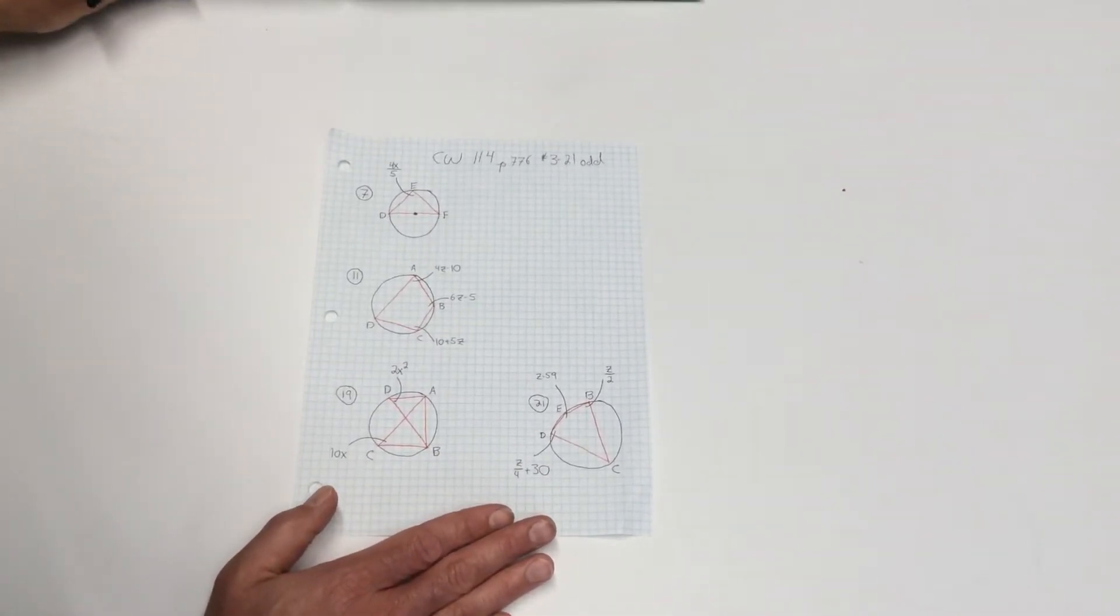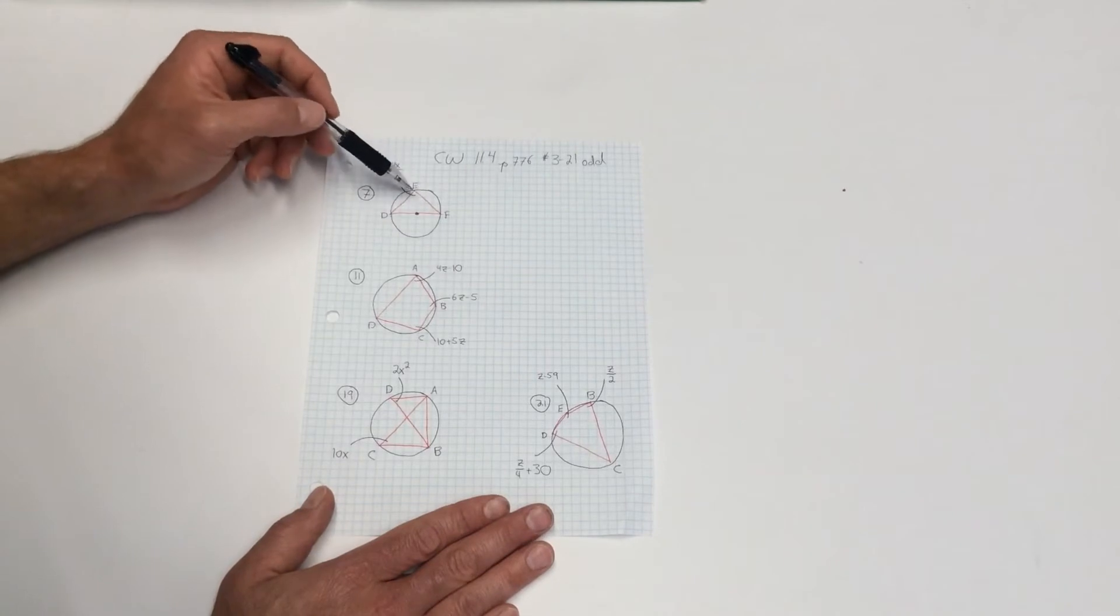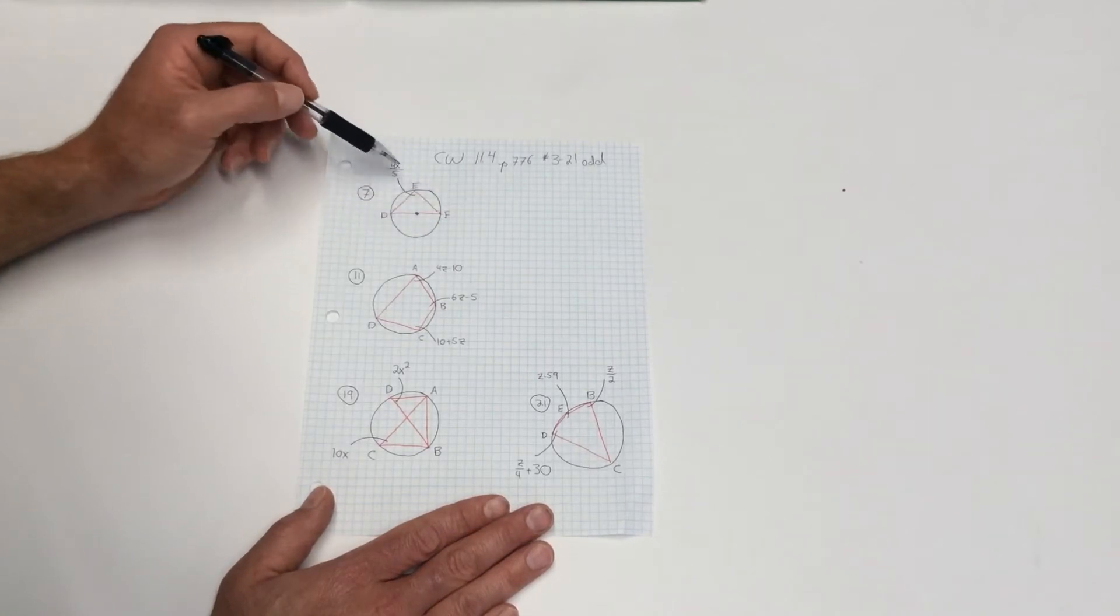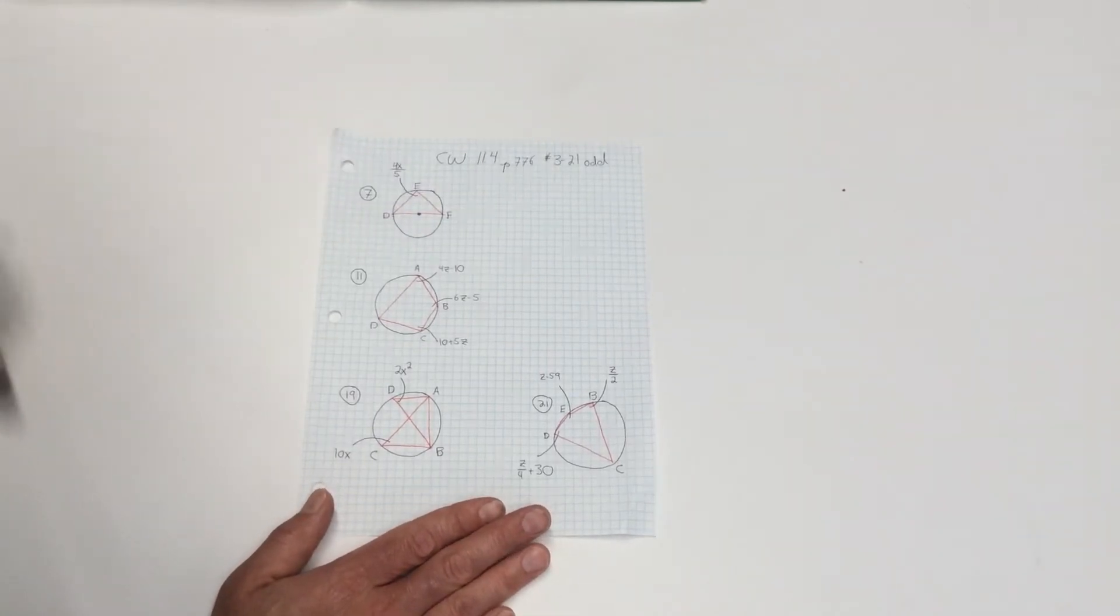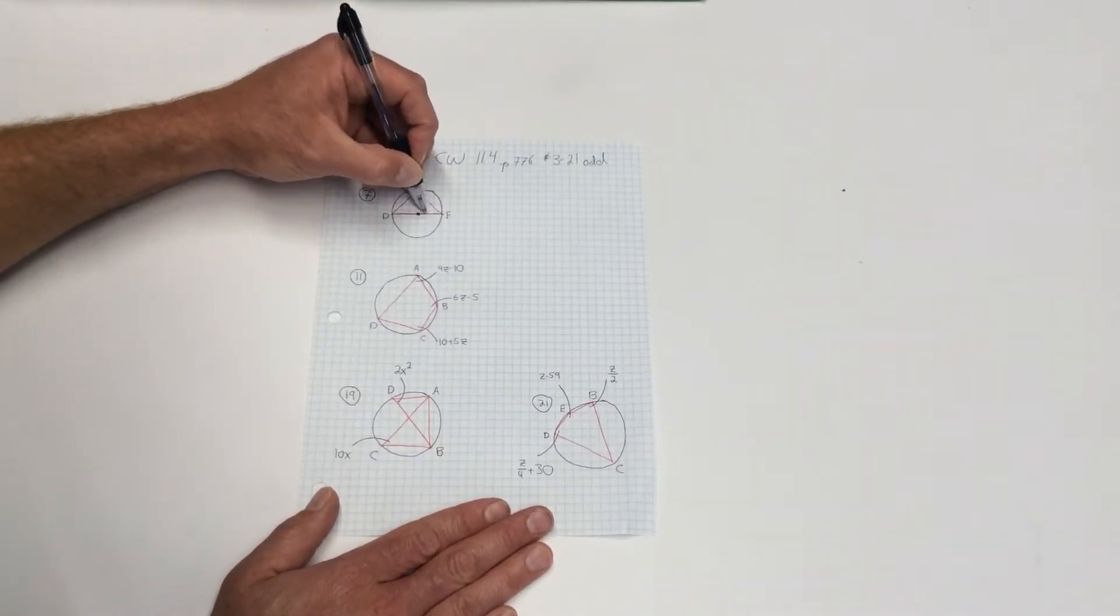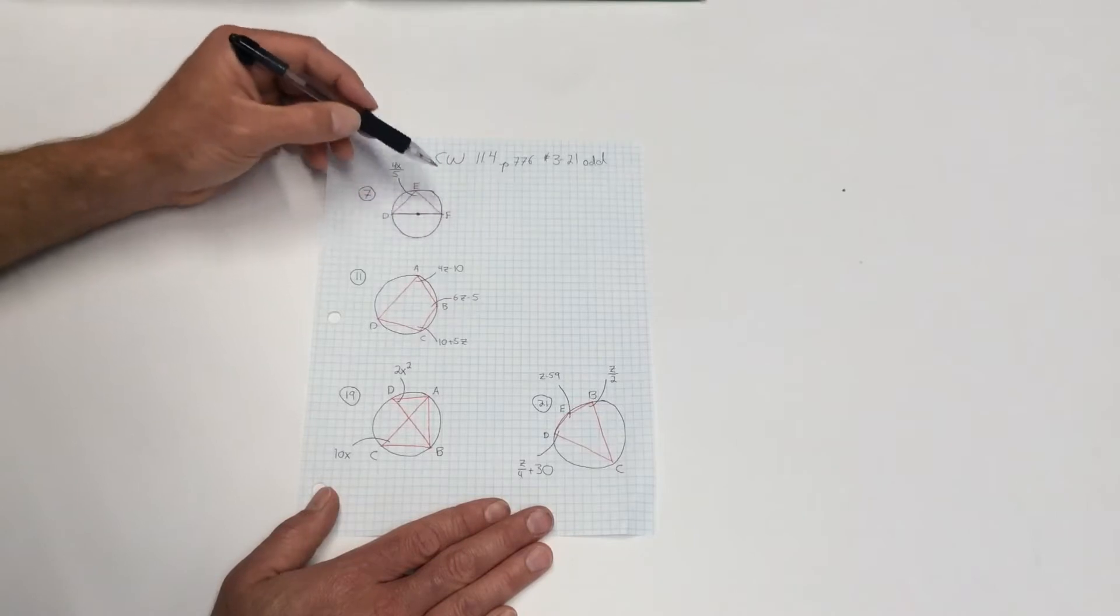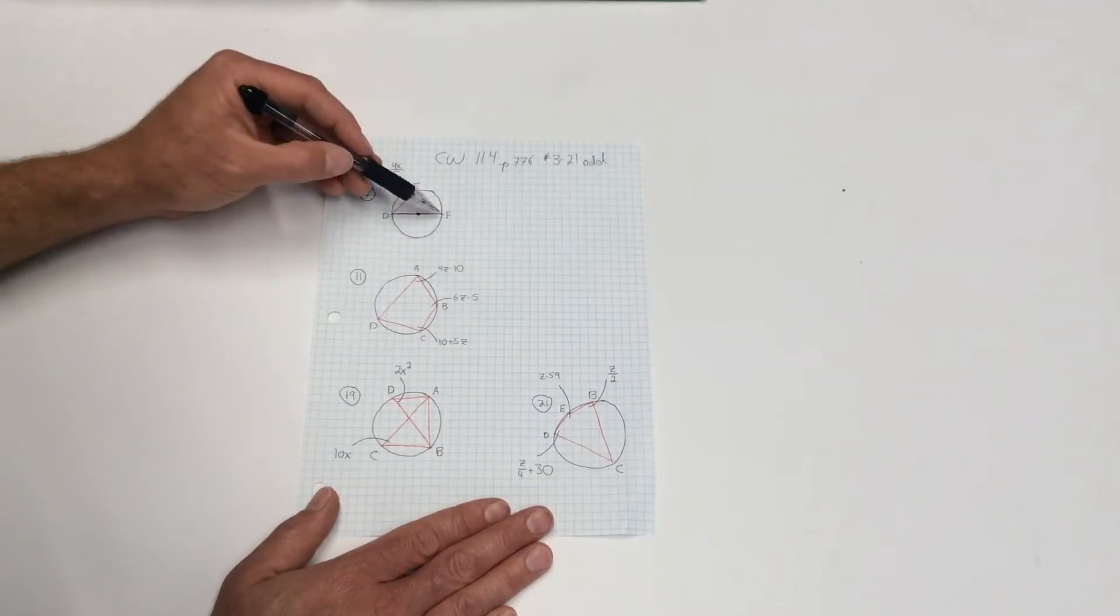Number seven, find the value of x. So you have to look at it and think, okay, what have they shown us in the four key questions for this lesson that would allow me to know what 4x over 5 is equal to? Well, whenever you see this right here, that they've got a line, a diameter going through the middle, they're telling you that means it intercepts half of the circle. So this is a semicircle.